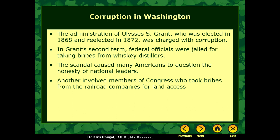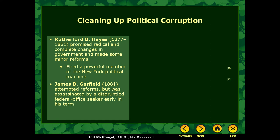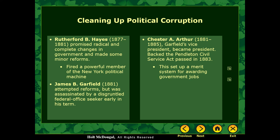Rutherford B. Hayes gets elected president from 1877. He promises radical changes and made some minor reforms — one of which was firing a very powerful member of the New York political machine. Garfield in 1881 tried reform, but workers were so upset that a federal officer actually shot and killed him. Chester Arthur, his vice president, then became president. He backed the Pendleton Civil Service Act, which set up a merit-based system for awarding federal contracts — companies that proved they could fulfill contracts efficiently and without corruption moved higher on the list to receive future contracts.